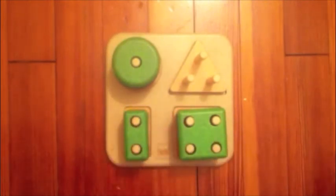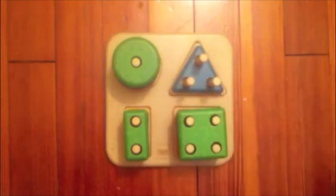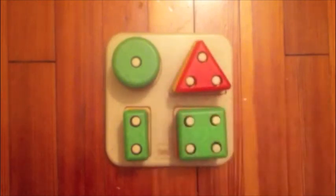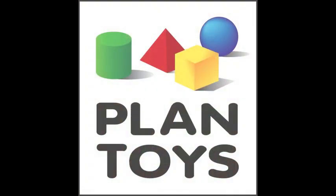Like the rest of the Plan Toys products, our sorting board is made entirely of recycled and recyclable materials, chemical-free rubberwood, and colored with non-toxic dyes. Even the labels on the box are printed with soy-based ink.